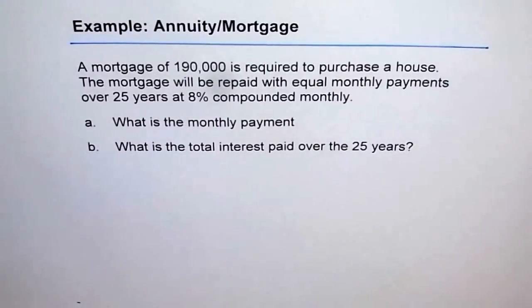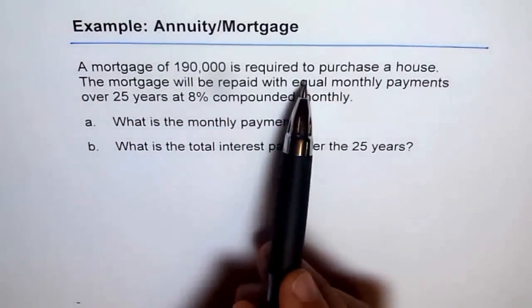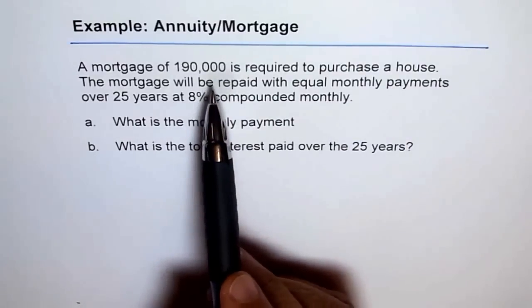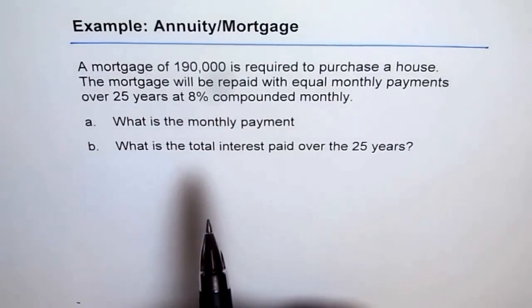Actually it was 190,000, and once you know how much is the total paid, then the difference will give you the interest. That is what you paid over a period of 25 years. We can use the present value formula here. Why present value? Because we know mortgage of 190,000 is required to be purchased in a house, so this is the present value. The formula to be used is the present value formula, which has R in it.